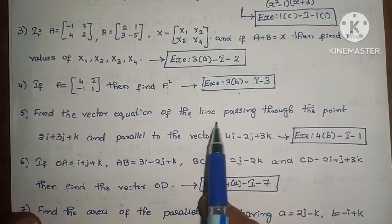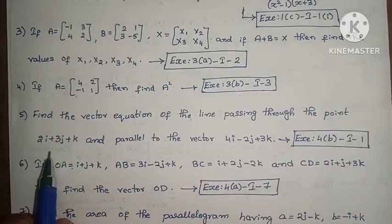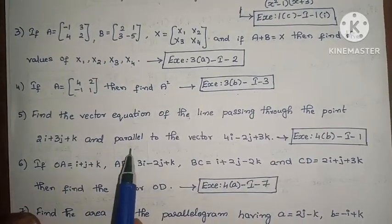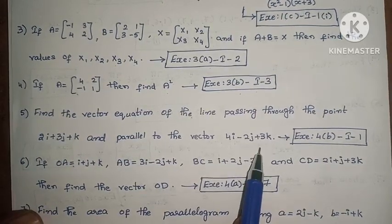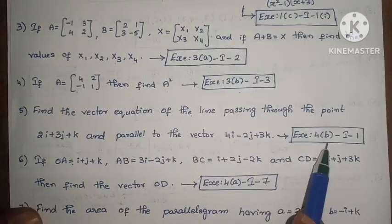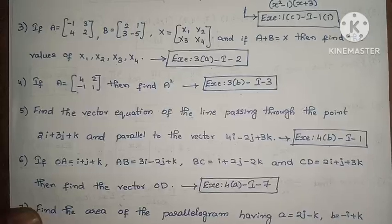Next, find the vector equation of the line passing through the point 2i plus 3j plus k and parallel to the vector 4i minus 2j plus 3k. Exercise 4, First Roman, First one.